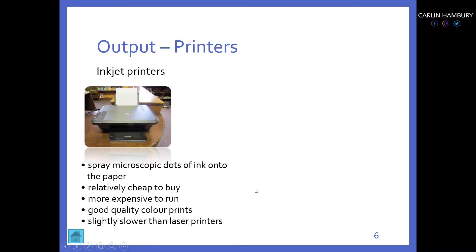Then we have our printers. There are two main types. The first is an inkjet printer, which sprays dots of ink onto the page. It's cheap to buy but expensive to run — you're looking at about 50 to 100 pages before you need to replace the ink cartridges. It gives good quality color prints and can print in black and white as well, but it is slower than a laser printer. Some allow you to scan and copy as well — those are multifunction printers.